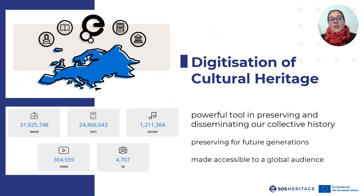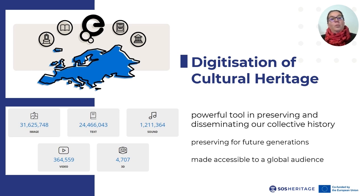In recent years, the digitization of cultural heritage has emerged as a powerful tool in preserving and disseminating our collective history. Museums, libraries and archives around the world are harnessing digital technology to ensure cultural treasures are preserved for future generations and made accessible to a global audience. On Europeana, a digital platform providing access to cultural heritage resources from European museums, galleries, libraries, archives and audiovisual collections, there are more than 31 million images, more than 25 million texts, more than 1 million sound records, more than 350,000 video records, and more than 4,000 3D contents.